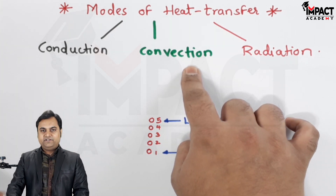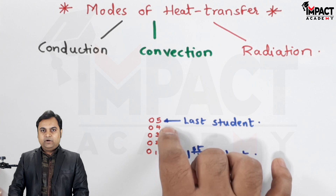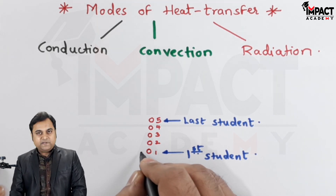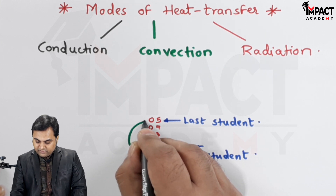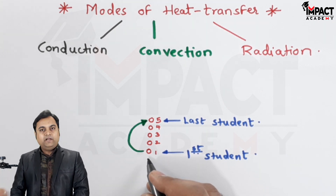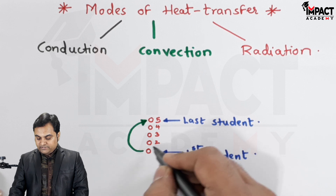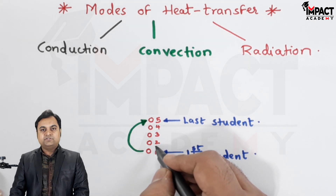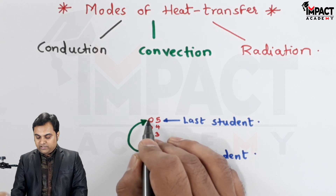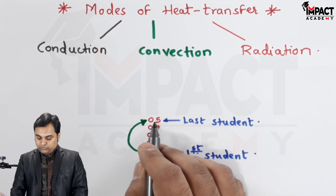In convection heat transfer, using the same example, another method of transferring the book from the first to the fifth student would be that the first student leaves their place, goes directly to the fifth student, and then transfers the book — bypassing all the other students. Similarly in heat transfer, when a molecule leaves its place and transfers heat directly to another molecule, that is called convection heat transfer.